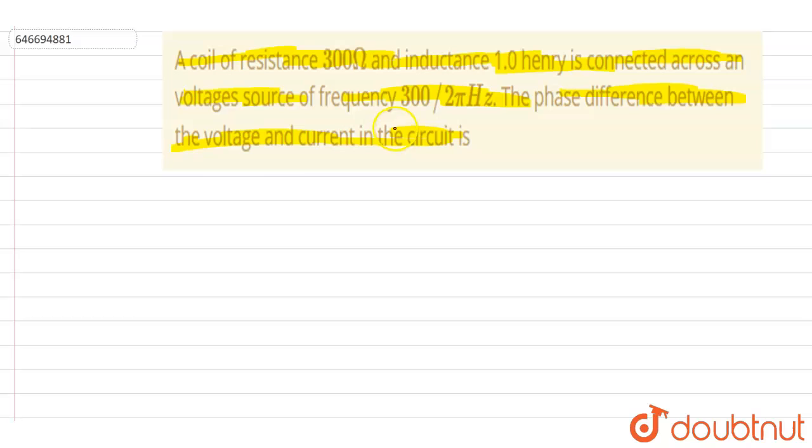So we can get the inductive reactance. It will be omega L, that is 2 pi f into L. So just put the value. It is 2 pi times 300 by 2 pi into L is one, so it is 300 ohm.